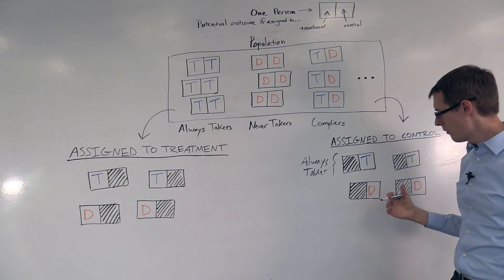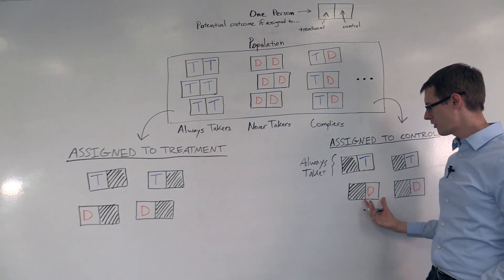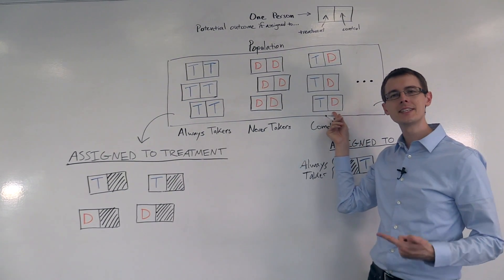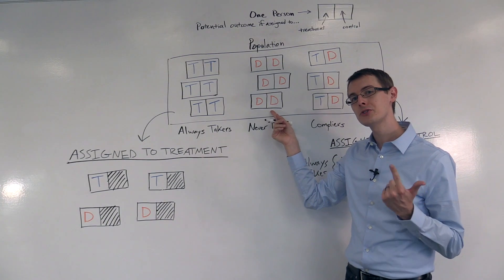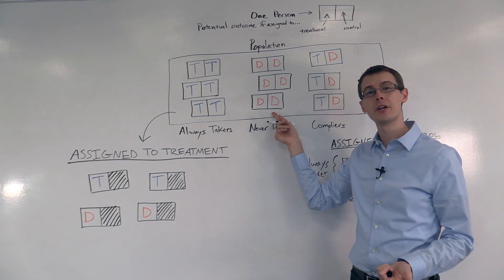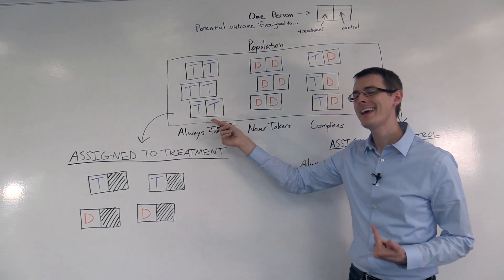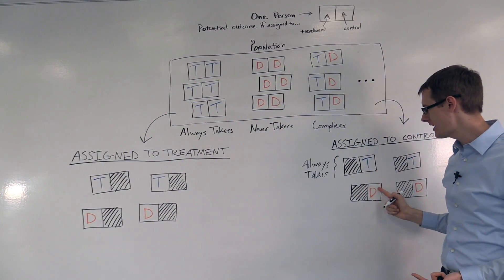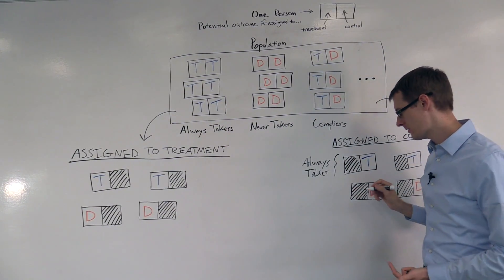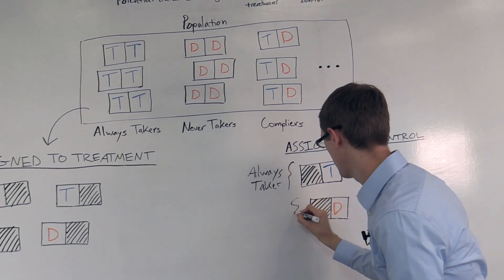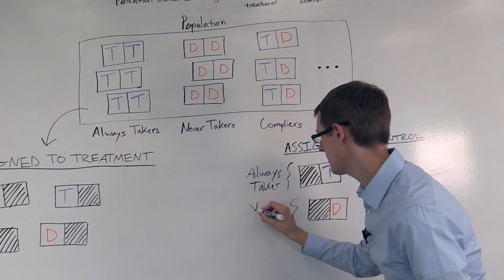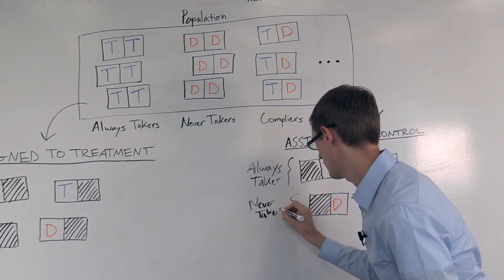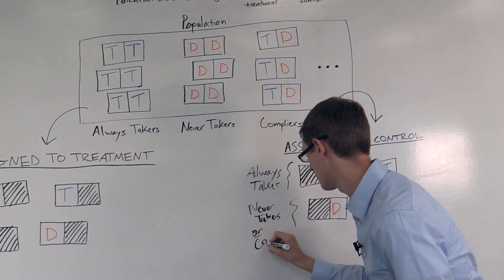What about these guys? Well, this person is assigned to the control group and they don't get treated. So they could be a complier — that's exactly what a complier would do. But they could also be a never-taker — that's also what a never-taker would do. They can't be always-takers, though, because an always-taker gets treated when they're assigned to the control group. So these two people could be never-takers or compliers.